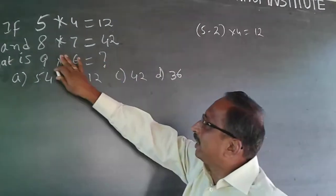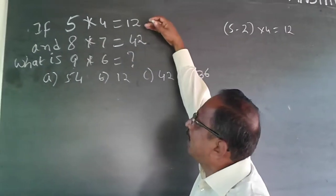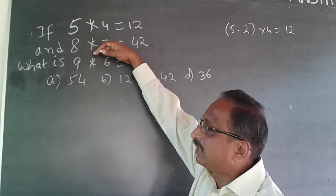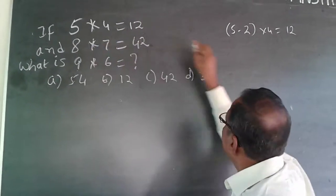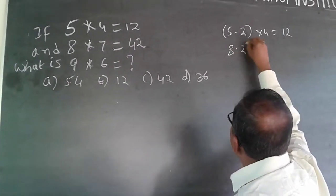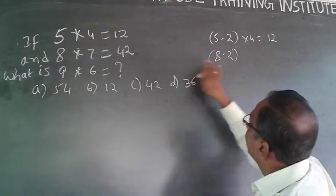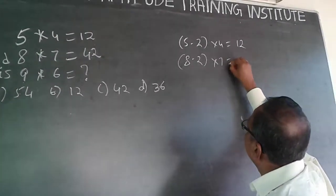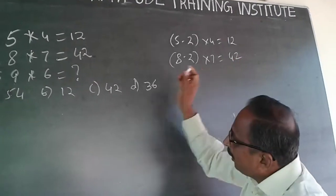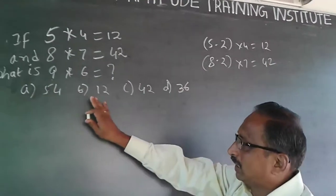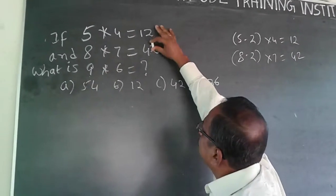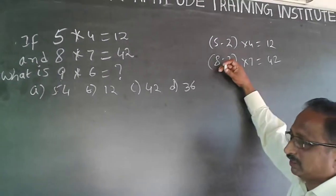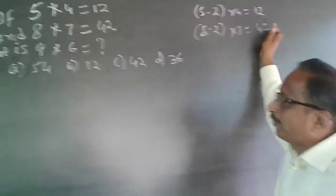Now, see whether the same thing is happening in the second equation. Find out whether the same pattern is applicable. So, 8 minus 2 gives 6, and 6 into 7 will be 42. This confirms our pattern: subtract 2 from the first number, then multiply by the second number.